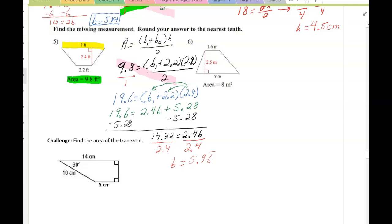Let's try problem number 6. Looking at problem number 6, I see that the area is 8 meters squared, and I'm trying to find this bottom base. So formula: area is base 1 plus base 2 times height over 2. I'm going to plug in the numbers. 8 equals 1.6 plus b times 2.5 all divided by 2.